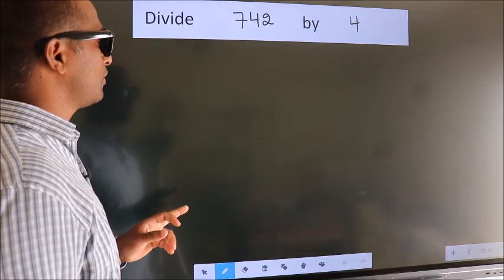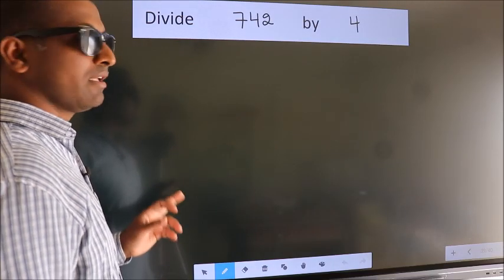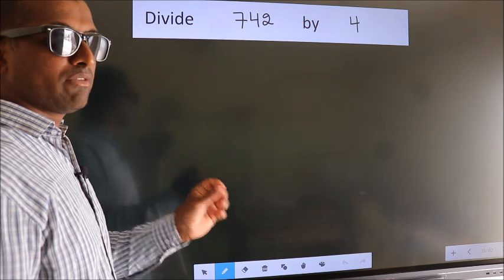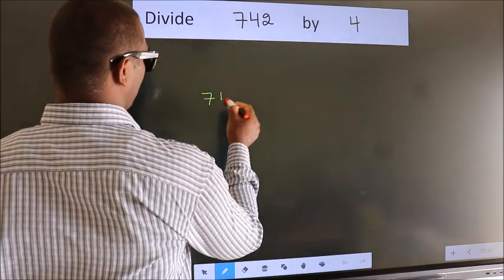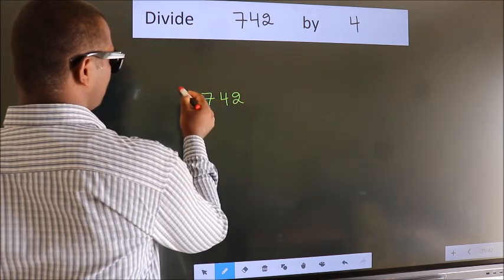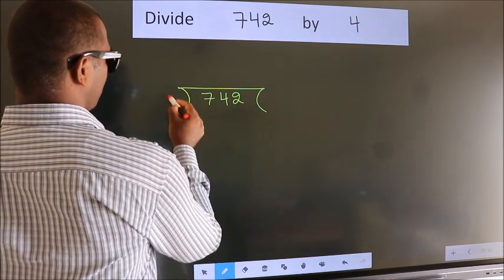Divide 742 by 4. To do this division, we should frame it in this way: 742 here, 4 here.